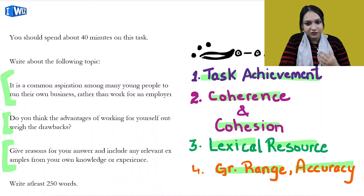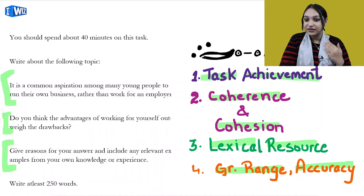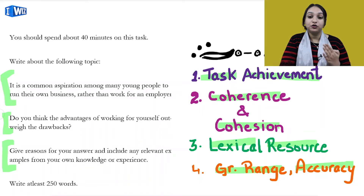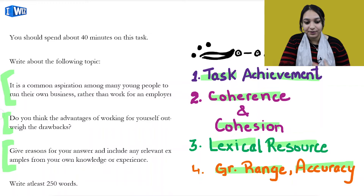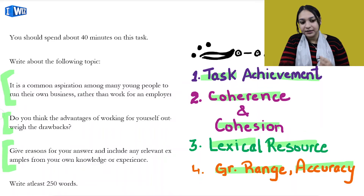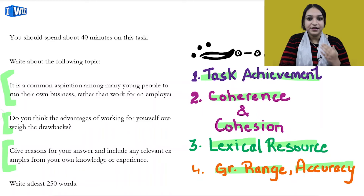And then we come to Grammar Range. Grammar range should be accurate - if you have wrong grammar then your marks will be cut. So do not use a construction unless you know how to use it in an accurate manner. This was the overview of the marking criteria. Now we are going to come to our question and, following these 4 marking criteria, we will try to write our essay.